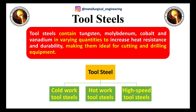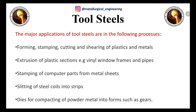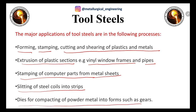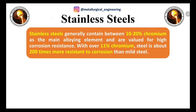The third type is tool steel. Tool steels contain alloying elements like tungsten, molybdenum, cobalt, and vanadium in significant quantities to increase heat resistance and durability, making them ideal for cutting and drilling equipment. Tool steels are categorized into cold work, hot work, and high speed tool steel. Major applications include forming, stamping, cutting and shearing of plastics and metals, extrusion of plastic sections like vinyl window frames and pipes, stamping of computer parts, slitting of steel coils, and dies for powder metal compaction.